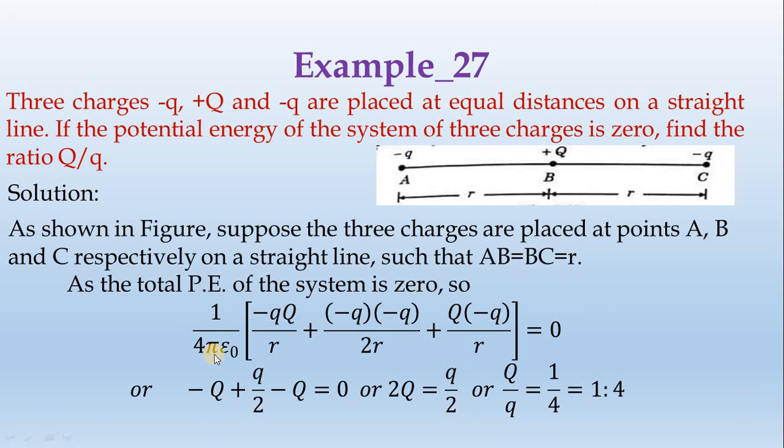The potential energy is 1 divided by 4π epsilon naught times the charge magnitudes with signs. Minus qQ divided by R, then minus q times minus q divided by 2R, plus the interaction of Q with minus q at distance 2R, equals zero.